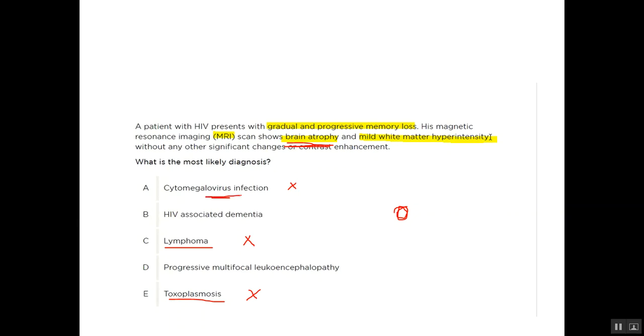So cytomegalovirus is wrong. I think we have two answers to choose between: HIV-associated dementia or progressive multifocal leukoencephalopathy. Progressive multifocal leukoencephalopathy is caused by JC virus.